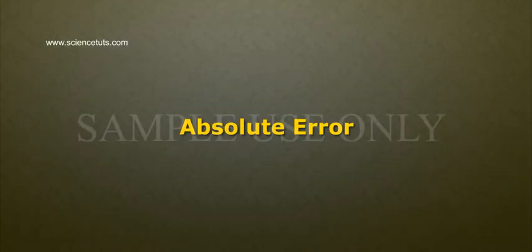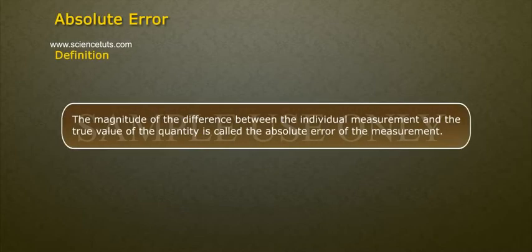Absolute Error. In this module we will discuss about absolute error. The magnitude of the difference between the individual measurement and the true value of the quantity is called the absolute error of the measurement.